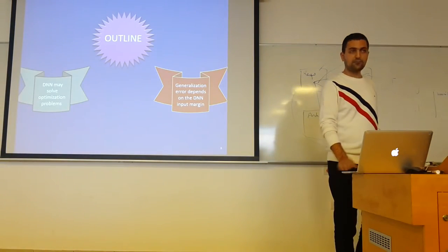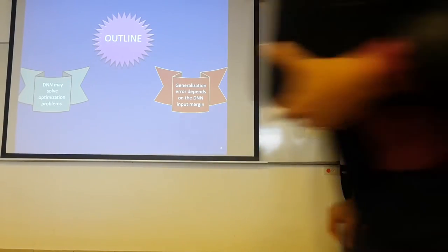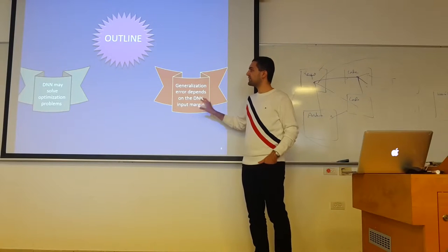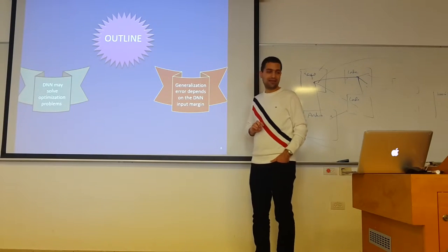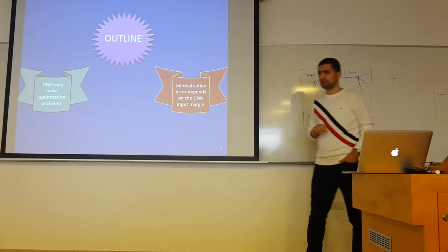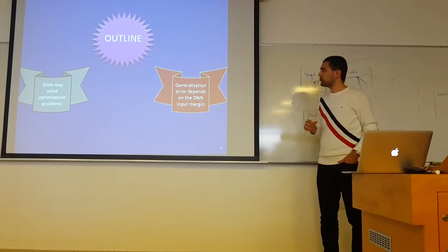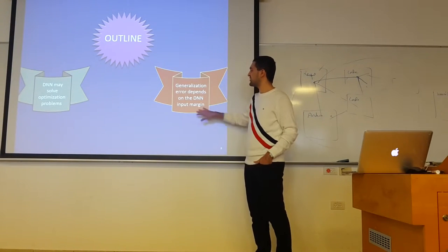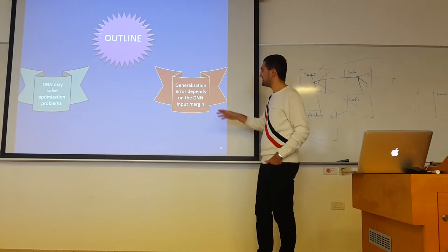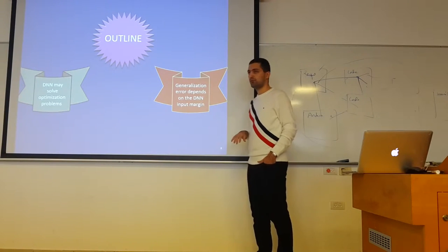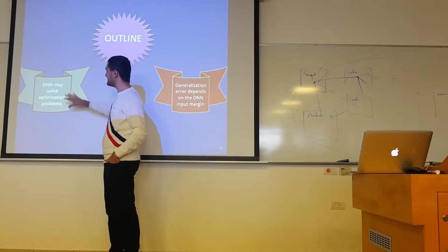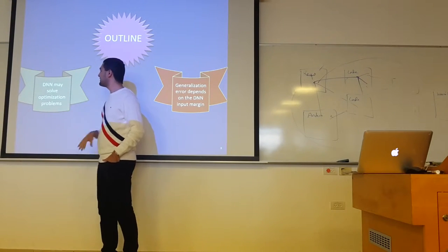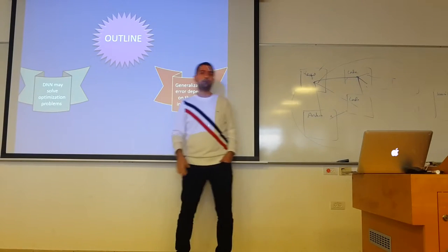Now I'll get to the two results discussed today. The first one studies the generalization error of neural networks and shows it depends on the deep neural network's input margin. The second, if time permits, shows that deep neural networks may solve optimization problems.